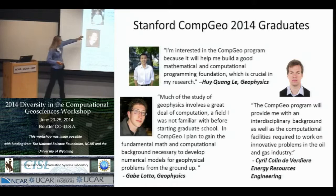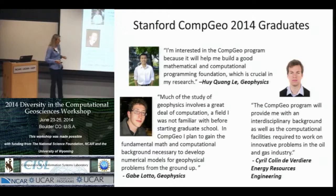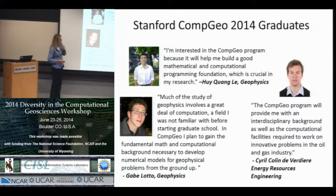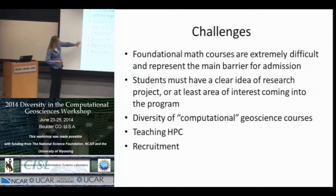These are our three students who just graduated this fall. Hui did a project on simulating and writing a code for a sophisticated way to solve the wave equation for seismic imaging, and he's continuing on to his PhD. Gabe wrote a solver for modeling tsunamis. And Cyril wrote an algorithm that would work on a GPU cluster — he was on loan from Total and went back to Total in France to finish his job.